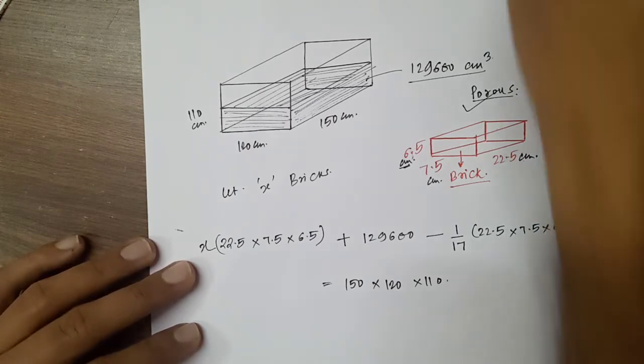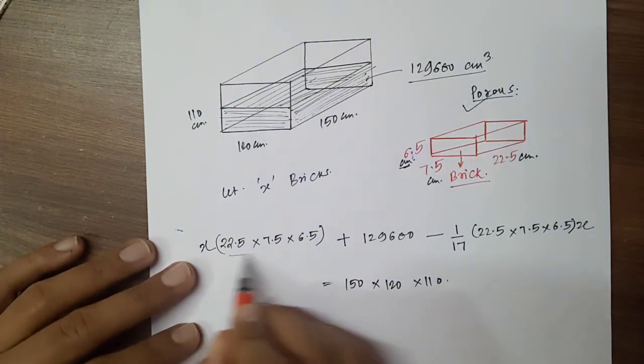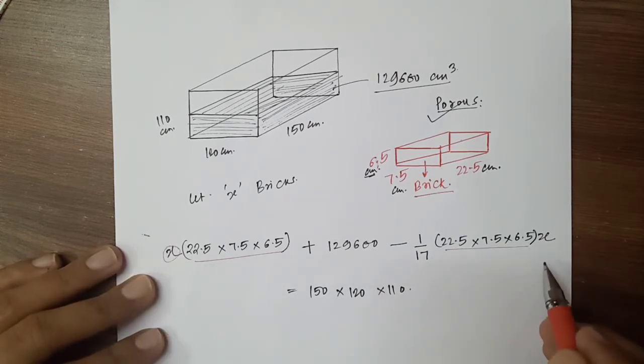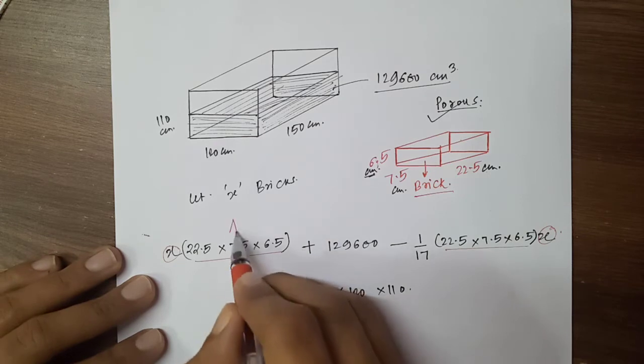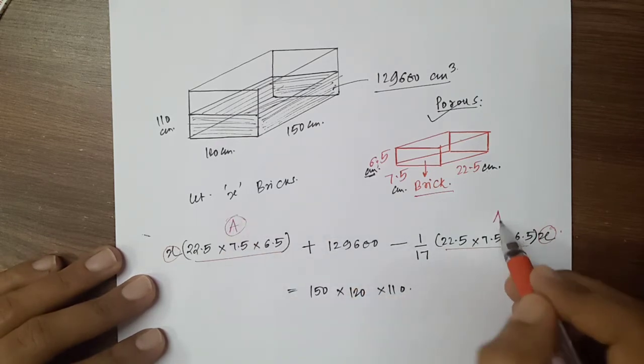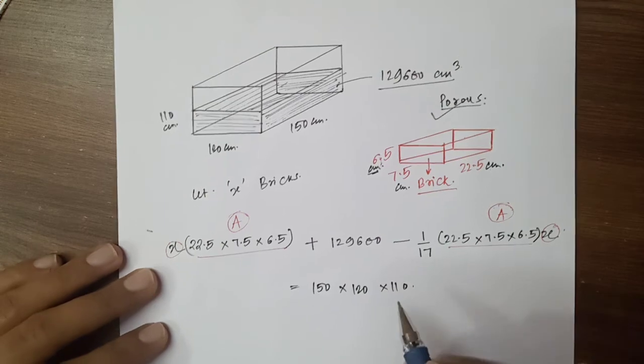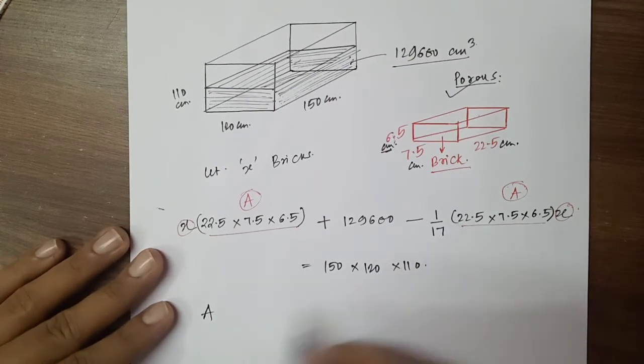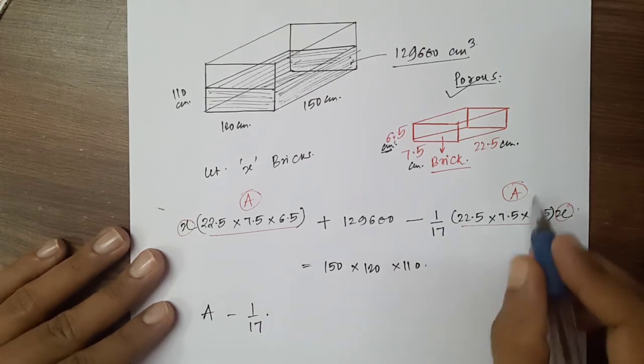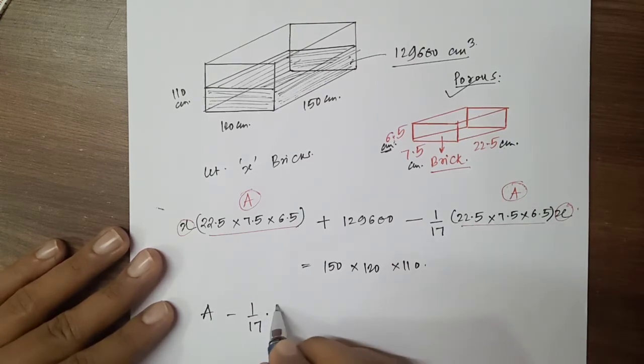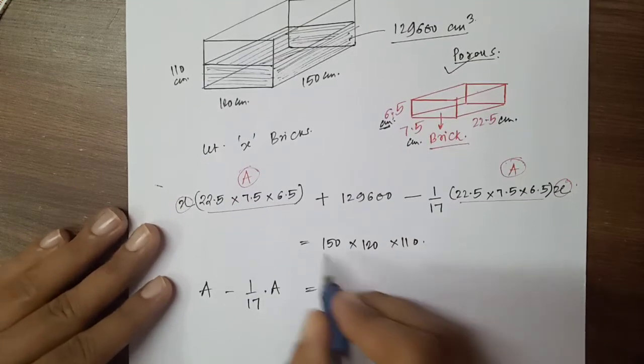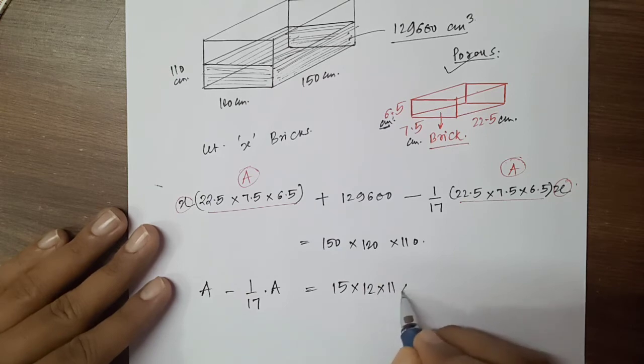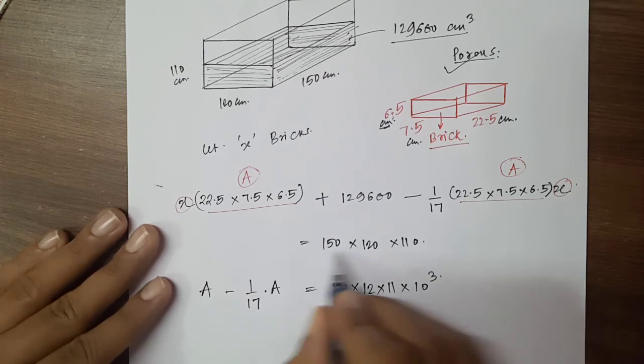Suppose we will do that here. Let's say this term is capital A, so our calculations are easy. A minus 1/17th A is equal to this term: 15 into 12 into 11 into 10 raised to 3, minus 129600.